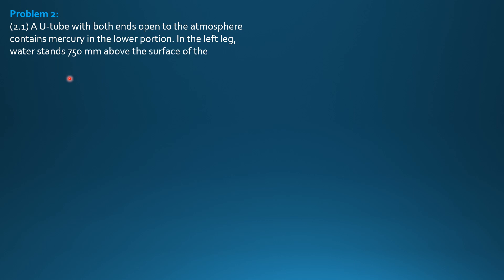Example two on pressure at a point. First problem: A U-tube with both ends open to the atmosphere contains mercury in the lower portion.